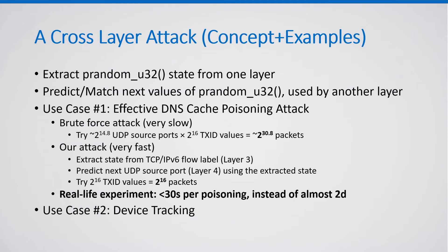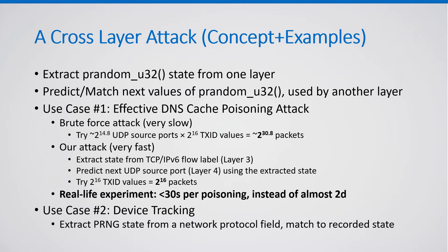Our second use case is device tracking, in which the attacker extracts the pRandomU32 state from a network protocol field and matches it to a recorded state from a previous visit of the device. In this way, the attacker can track devices across IPv4 and IPv6 networks and across TCP and UDP connections.